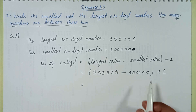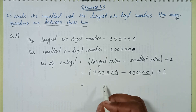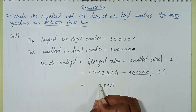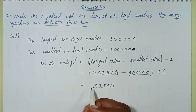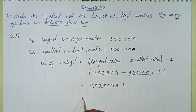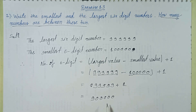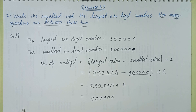Now solving the bracket portion: subtracting the digits, 9 minus 1 gives 8, plus 1. Each carry gives 10, carry 1 — and we get 9 for each digit. So the result is 900000.